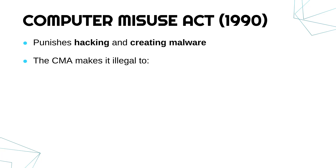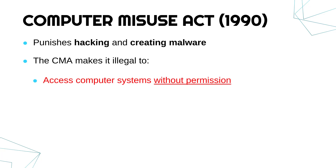As it currently stands, this law makes it illegal to do the following things. First, it's illegal to access computer systems without permission. This can be something as simple as guessing somebody's password — that is technically accessing a system without permission. More advanced hacking might be finding a bug in the software and trying to get a backdoor into a system, but if you haven't got permission, this is illegal.